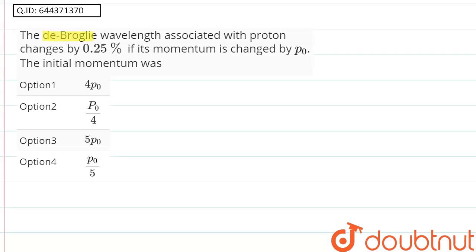Hello friends, the problem is: the de Broglie wavelength associated with a proton changed by 0.25% if the momentum is changed by p0.